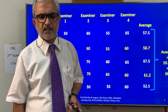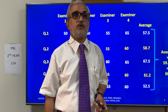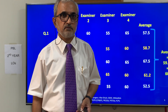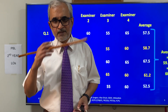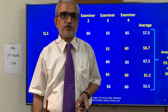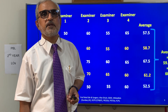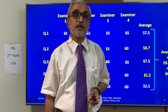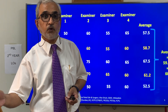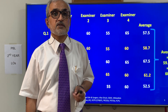This is the Angoff method. There is another approach where you cluster the questions according to a defined principle. After defining the characteristics of borderline students, the examiners read a cluster of questions and determine how many borderline students would answer that cluster correctly. Then the second cluster, third cluster, and fourth cluster are assessed in the same way. The averages are calculated similarly — this is the Ebel method.